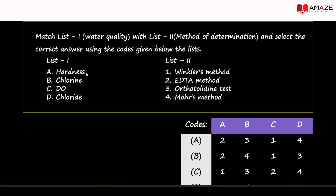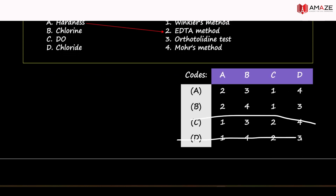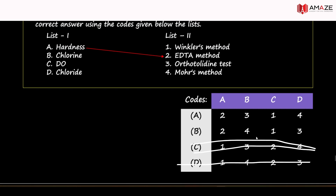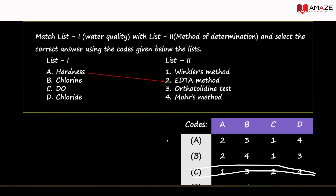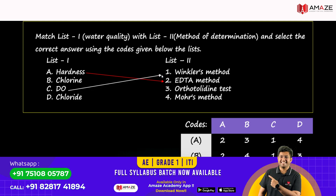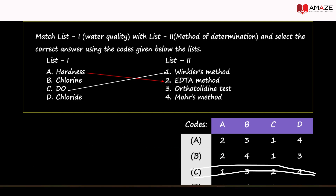Hardness is matched to EDTA, so options C and D are eliminated. Dissolved Oxygen — DO stands for Dissolved Oxygen, and it is tested using Winkler's Method. So we can eliminate options A and B accordingly. Chlorine is tested using the OrthoTolidine Test, and Chloride is tested using Mohr's Method. We match accordingly and get the correct option.